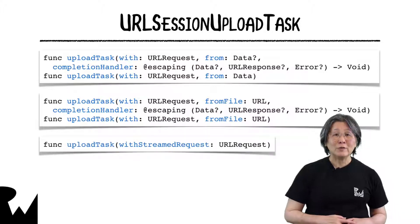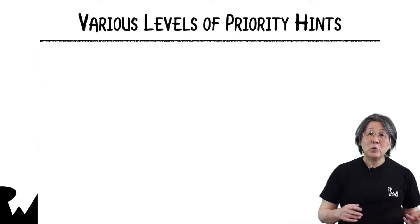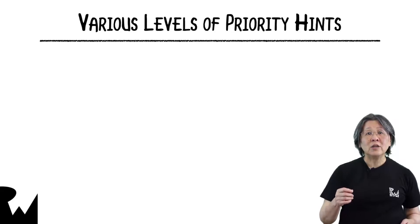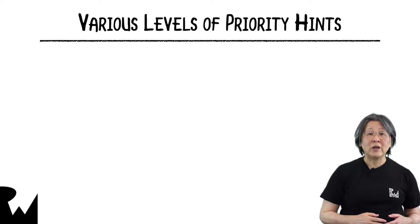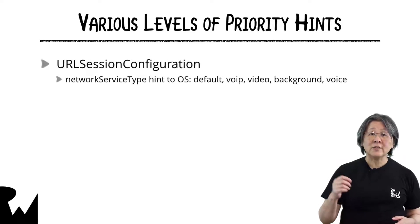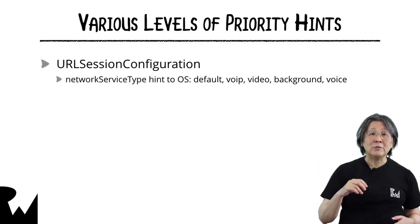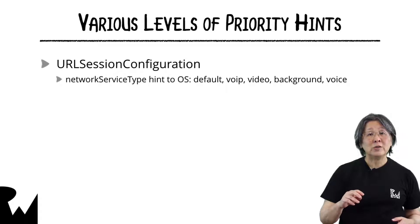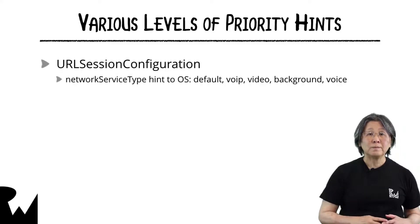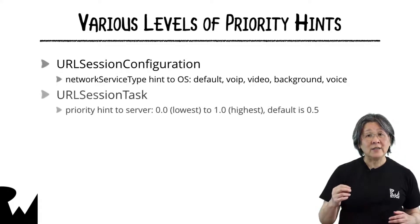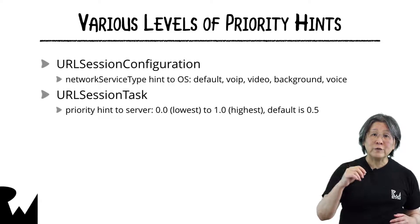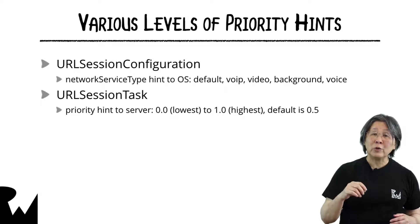Streaming is outside the scope of this course. Now we're working with more complex tasks, this is a good time to look at priority settings. You can suggest priority levels at different levels of the URL session hierarchy. The session configuration can tell the system that it's transferring a specific type of data, and the operating system can use this info to set priorities and balance performance against battery load. A session task can ask for a priority level on the server — these are class constants: default priority, low priority, and high priority.